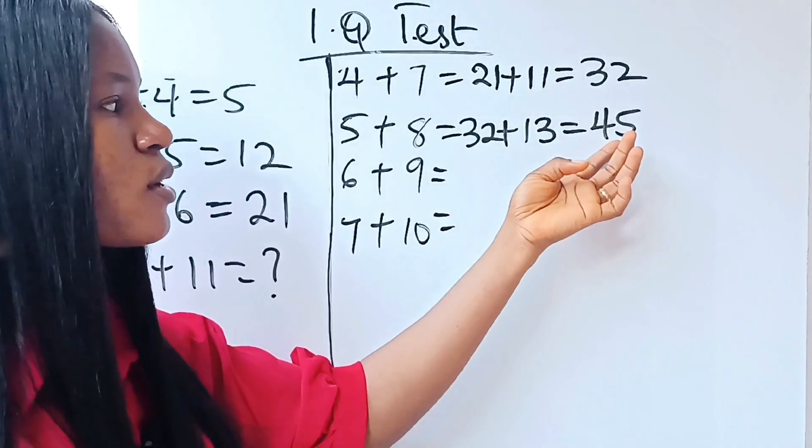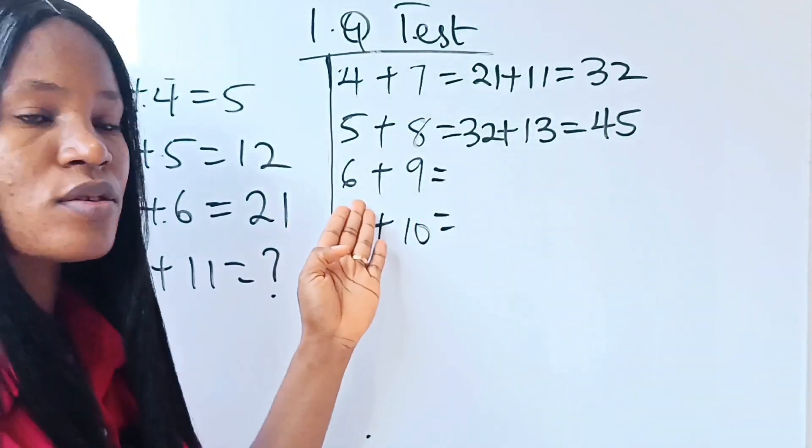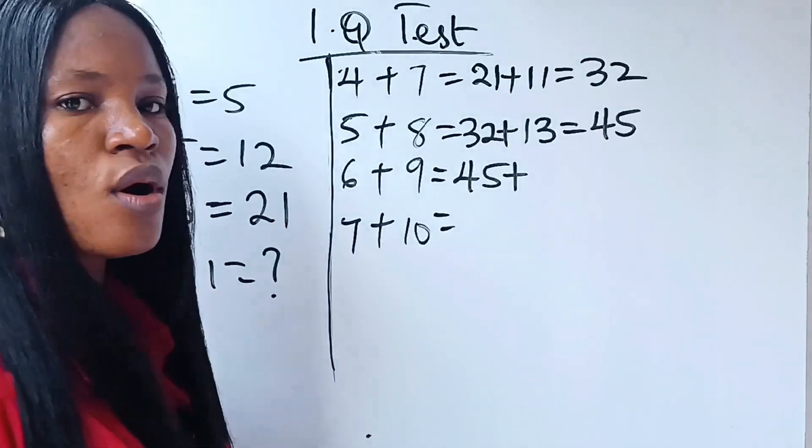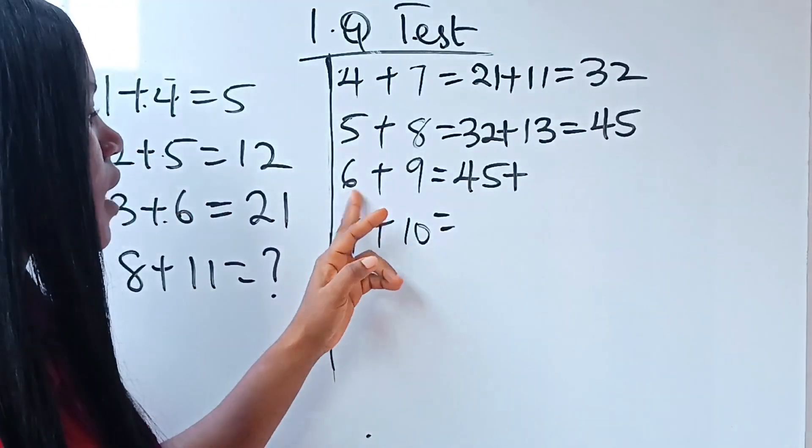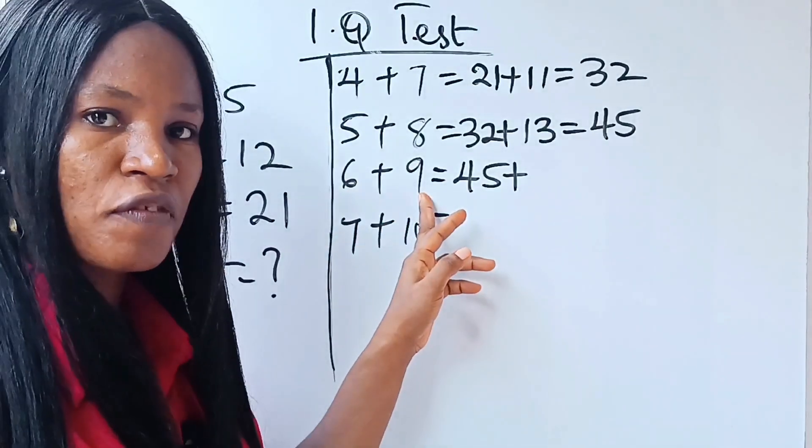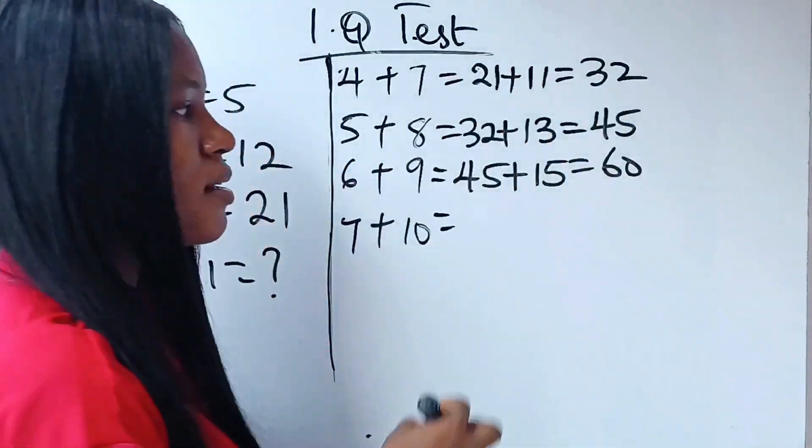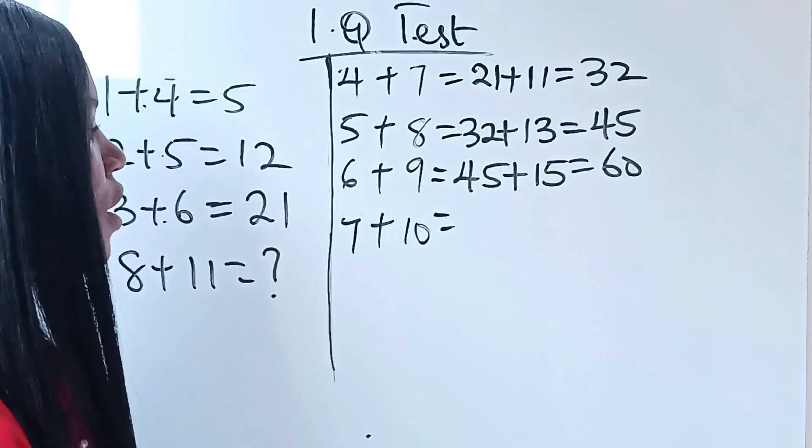Okay. Now, we are going to add this 45 to the sum of this, right? So, it's going to be 45 plus 6 plus 9 is 15. And if we add that, we are going to get what? 60.